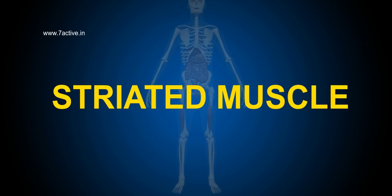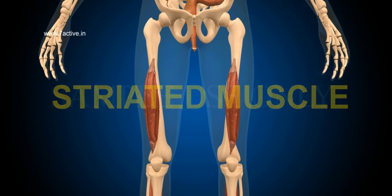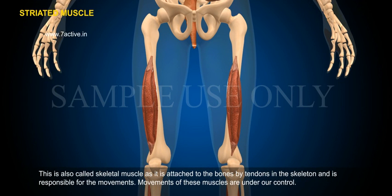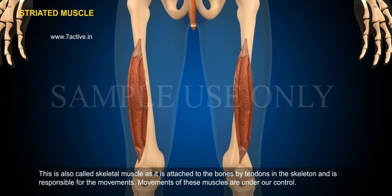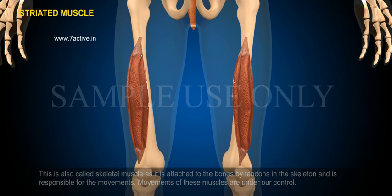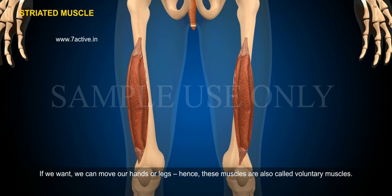Striated Muscle. This is also called skeletal muscle as it is attached to the bones by tendons in the skeleton and is responsible for the movements. Movements of these muscles are under our control — if we want, we can move our hands or legs. Hence, these muscles are also called voluntary muscles.